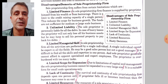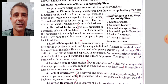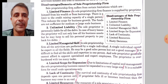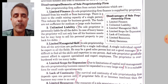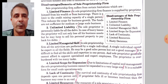The first point is limited finance. In this type of organization, since the person who is the owner of the business has to put the capital into the business himself, that capital could be limited in nature because he may not have very large savings, or he may not be able to borrow a big amount from financial organizations. In that way, his capital will be limited.